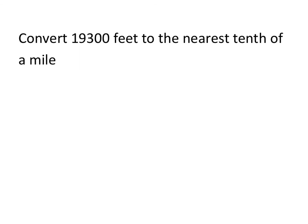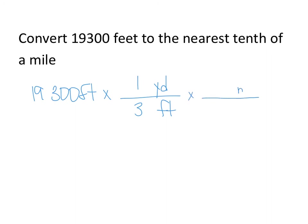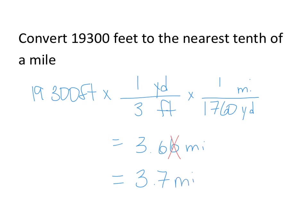In our last example, we're going to convert 19,300 feet to the nearest tenth of a mile. We have feet, and as a midway step, we'll work toward yards. We know that one yard equals three feet. Next, we convert yards into miles, knowing that there is one mile for every 1,760 yards. A quick calculation on our calculator gives approximately 3.66 miles. However, the question wants us to round to the nearest tenth, so we round up and get approximately 3.7 miles.